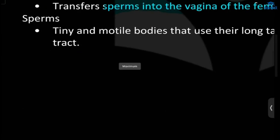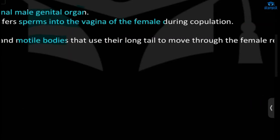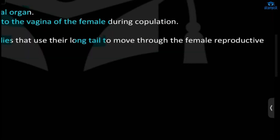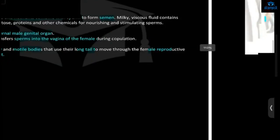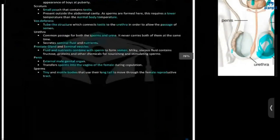Next, we have sperm. It is a tiny and motile body that uses a long tail to move through the female reproductive tract. These are all the parts of the male reproductive system.